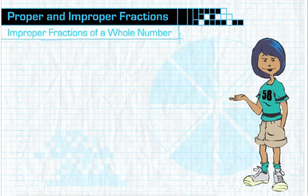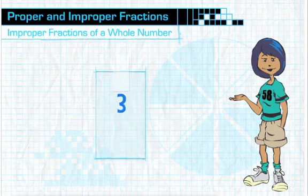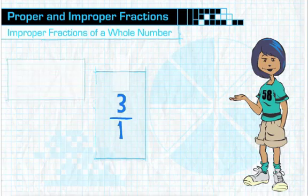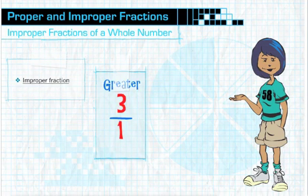Now, let's look at an improper fraction with a numerator that is greater than its denominator. This fraction, three over one, is a great example because it demonstrates a few things. First of all, three over one is an improper fraction because its numerator is greater than its denominator.